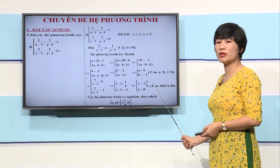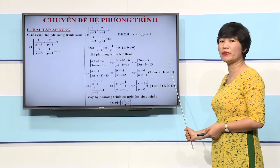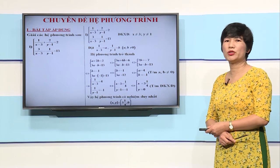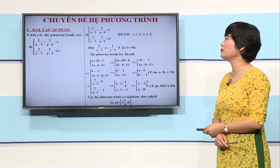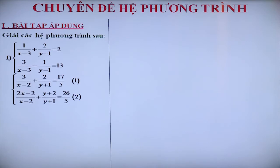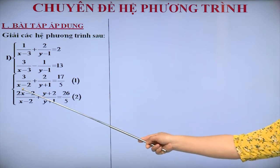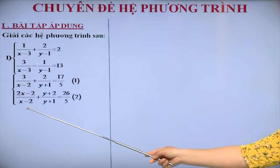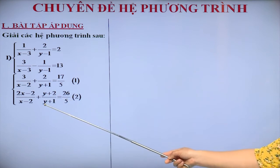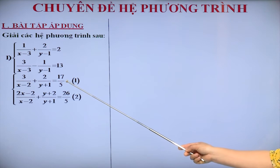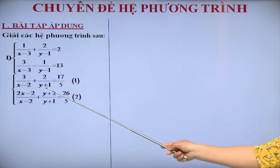Như vậy, để giải hệ phương trình đã cho trong câu 1 này, cô cho mình đã cùng sử dụng phương pháp đặt ẩn phụ. Phương pháp đặt ẩn phụ thường được sử dụng trong trường hợp các phương trình của hệ đều phức tạp, tuy nhiên chúng biểu diễn được qua 2 đại lượng. Trong kỳ thi vào lớp 10 phổ thông chuyên Lê Hồng Phong năm học 2011-2012, cô thấy có bài yêu cầu giải hệ phương trình có dạng tương tự, ở phương trình thứ nhất cũng hoàn toàn có thể biểu diễn qua 1/(X trừ 2) và 1/(Y cộng 1).